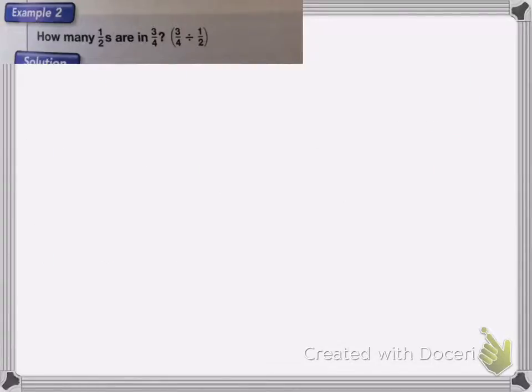Now the second part is with dividing fractions. So in this problem, we have how many 1 halves are in 3 fourths. So it's 3 fourths divided by 1 half. So if you remember our trick, there's two steps, and the first step is you need to find the reciprocal of your second number, this one.